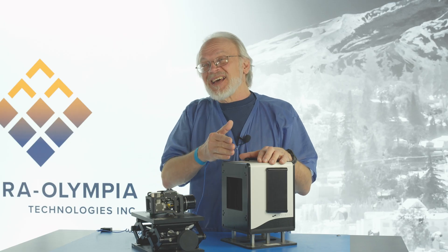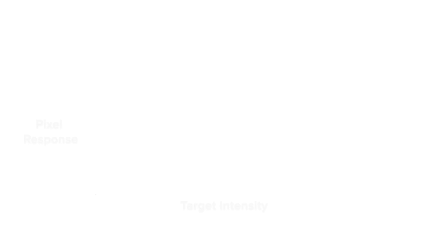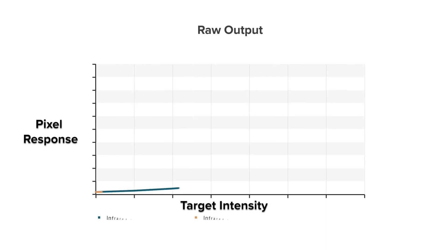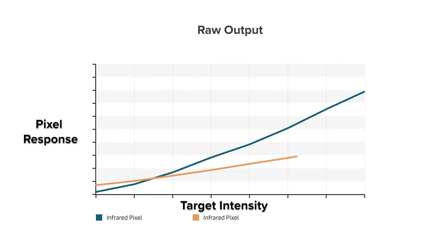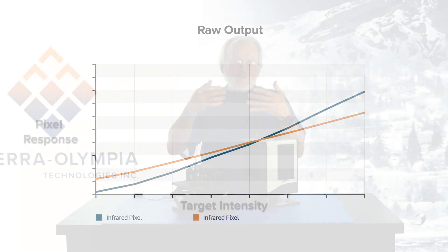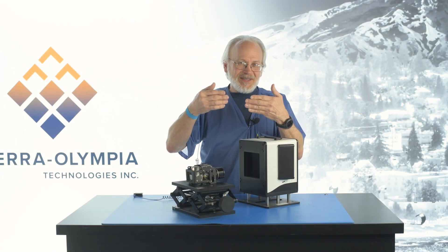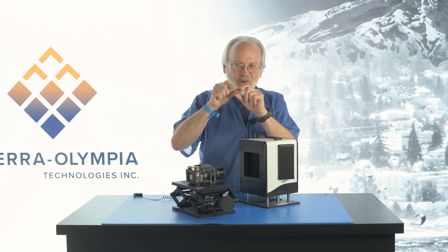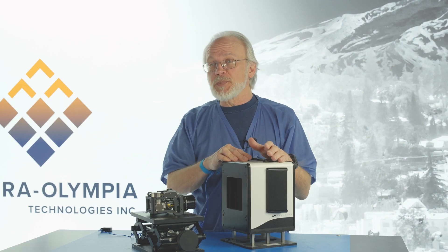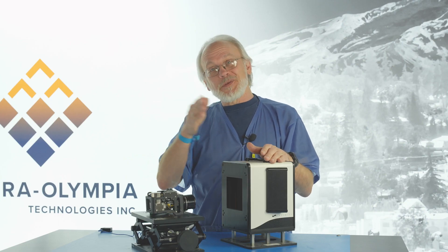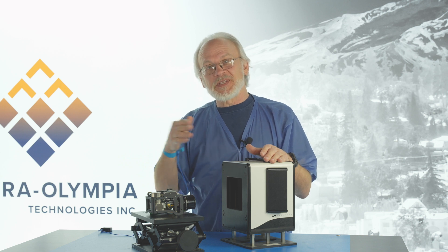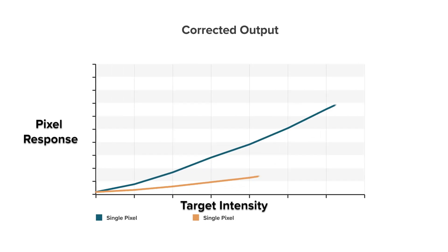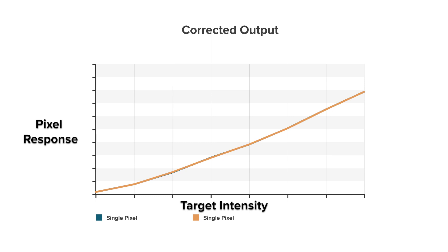If we do that on another pixel — say the adjacent pixel — we're going to find that it will have a slightly different characteristic. The reason this happens is because even if it's the same material on the same substrate, the way that we make detectors happens at a micro scale. We use an automated computer program to go through each of the 300,000 pixels in the array and alter each one individually so that the entire array becomes uniform.